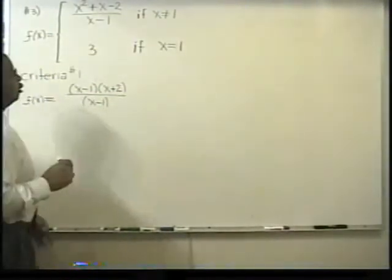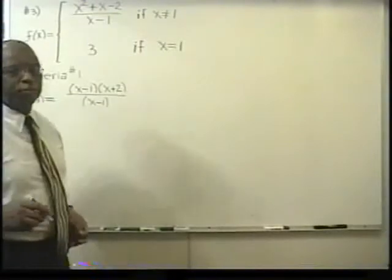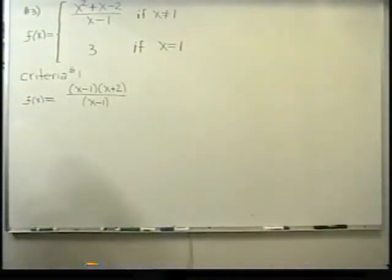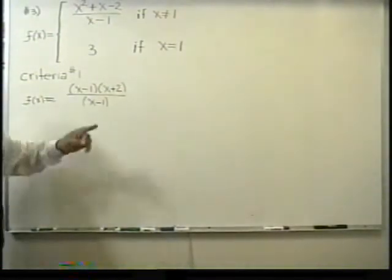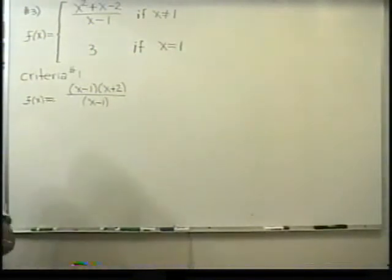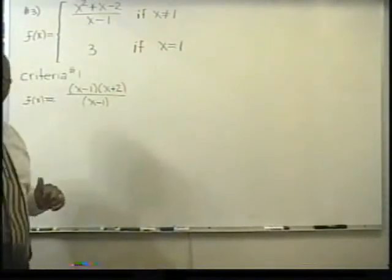Now, again, this is known as a restriction. With the original given function, we are restricted. We cannot use the value of x equals one. Even though we can reduce this, that restriction does not allow us to use x equals one with the first part of the function.